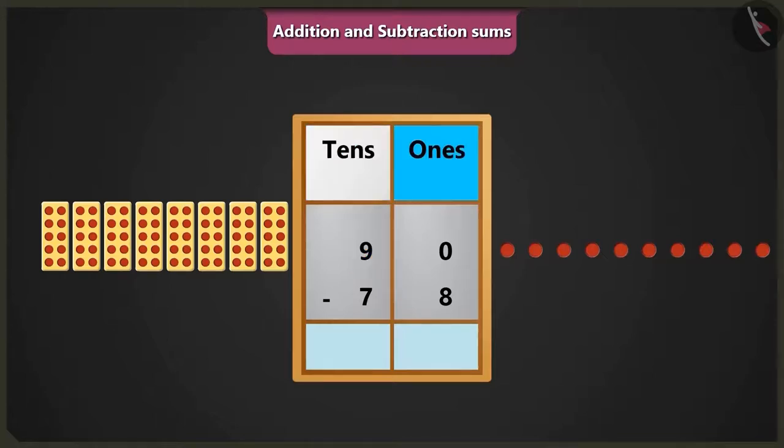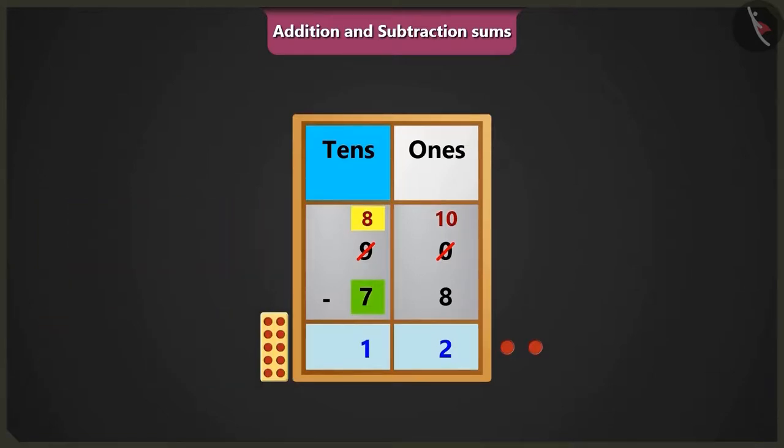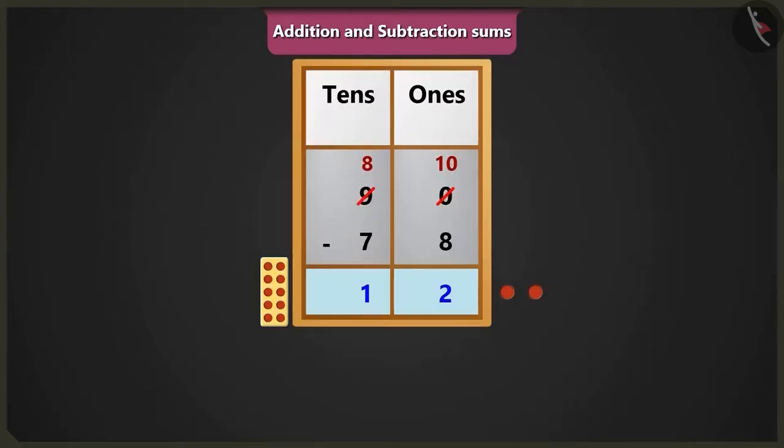So we will write 10 ones in place of 0 in the box of ones. Now if we will subtract 8 ones from 10 ones, then it will be 2 ones left. Now look here. If we will subtract 7 tens from 8 tens of the box of tens, then 1 ten would be left. Yes.